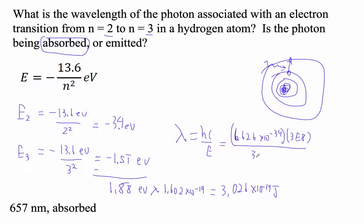3E8 over 3.026 times 10 to the minus 19 joules. All right, here we go. So finally, 6.626 times 10 to the minus 34 times 3E8 divided by the answer I just got.